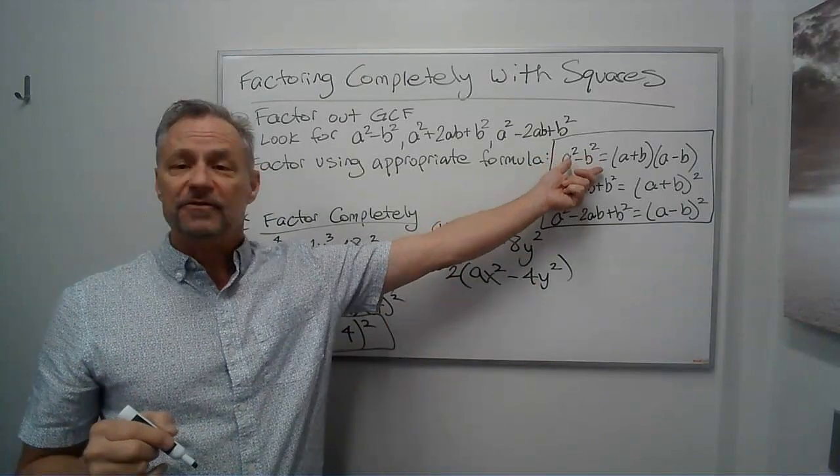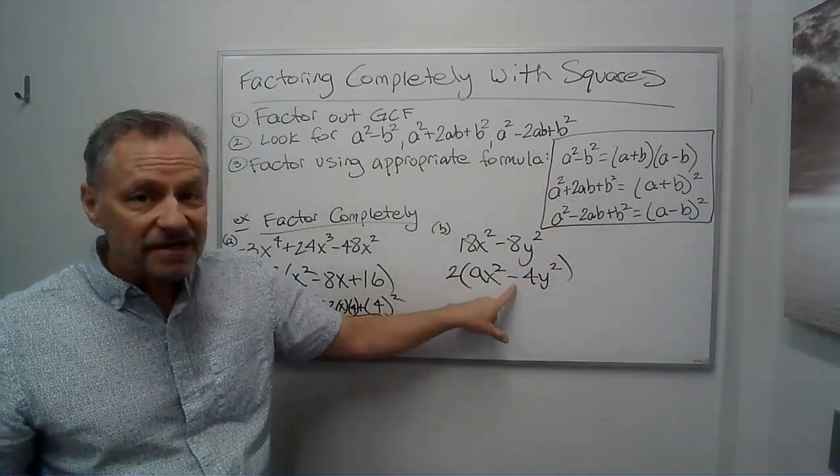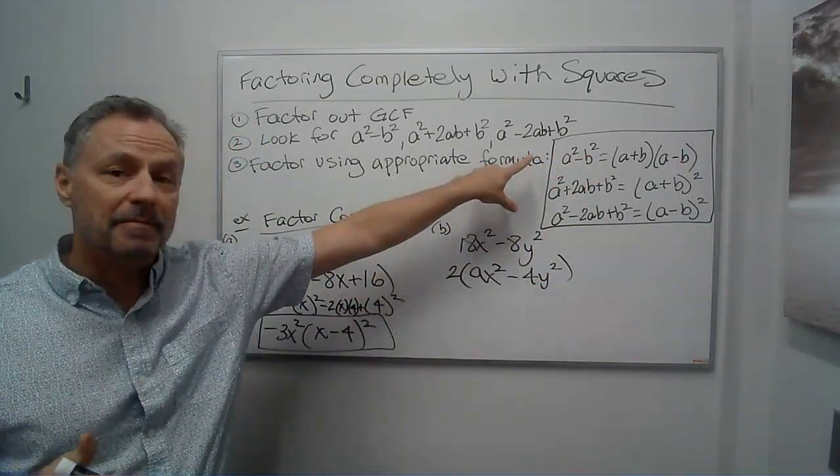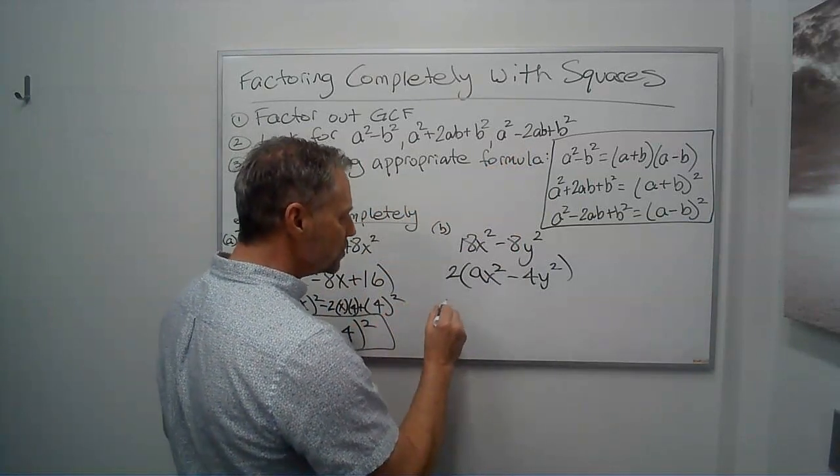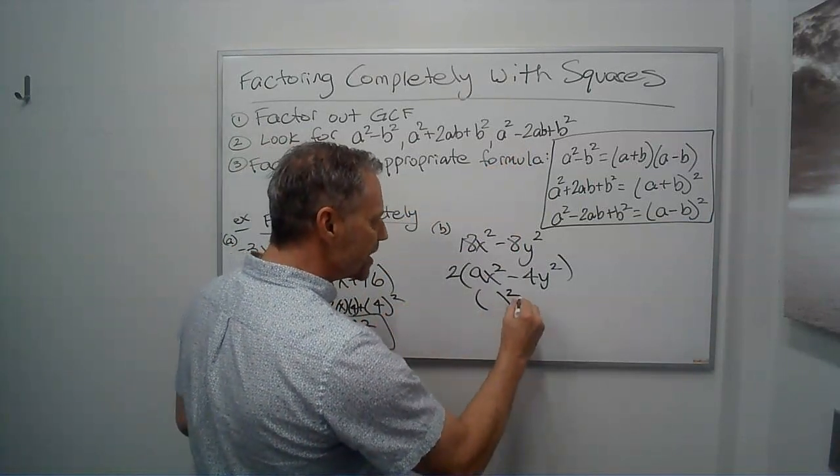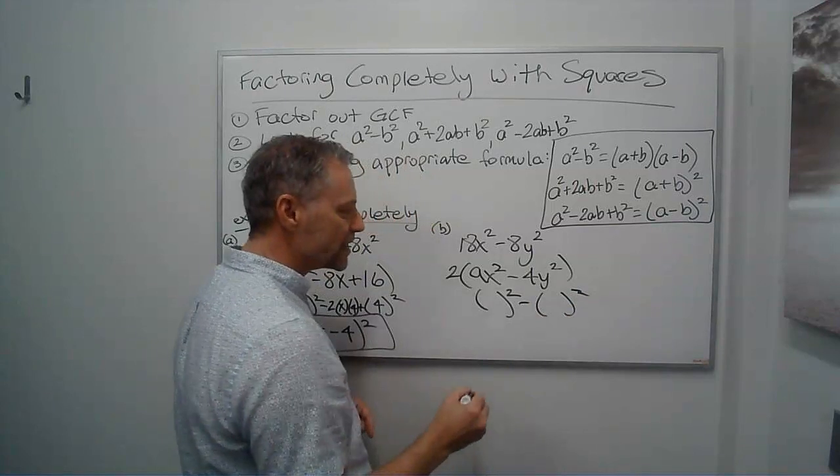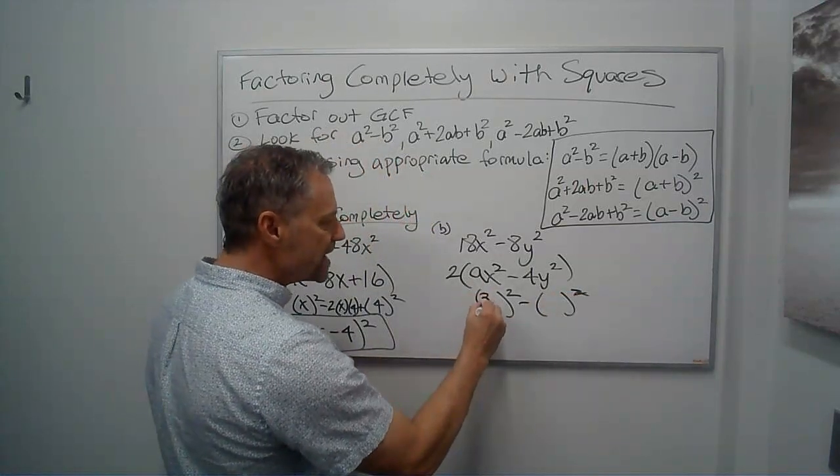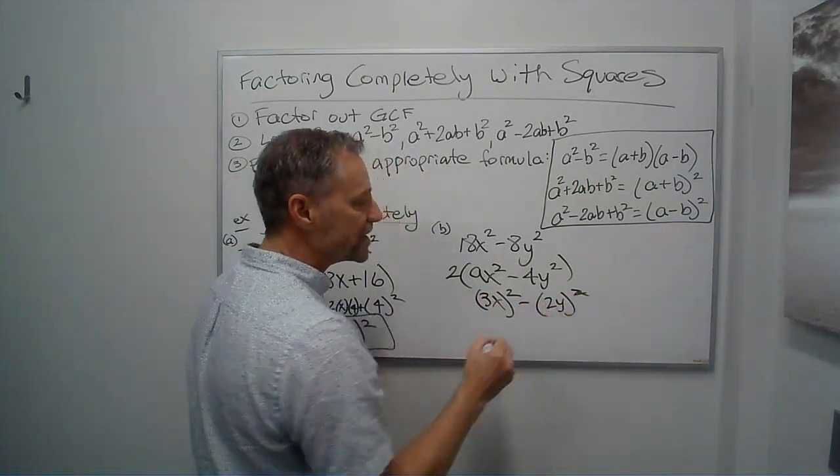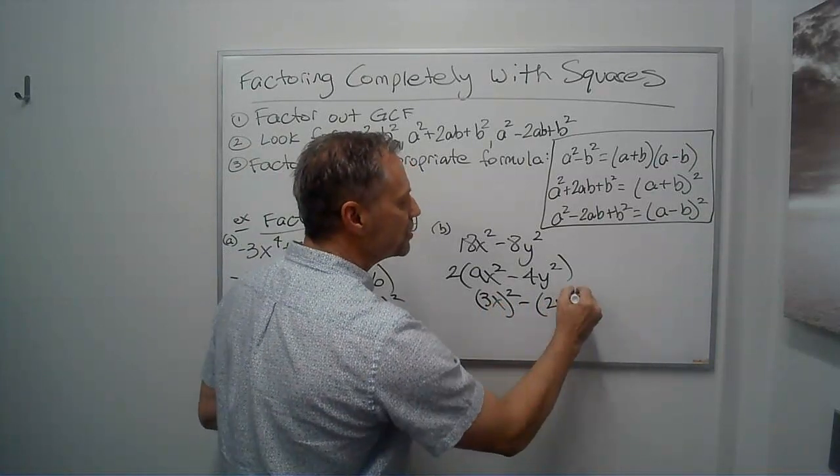Two terms, look for the difference of two squares. Remember, if that's a plus, that's always prime. It doesn't factor, but it might be the difference of squares. So is this a perfect square, and is this a perfect square? Well, yeah, this is 3x quantity squared, and that's 2y quantity squared. Make that squared look a little bit better.